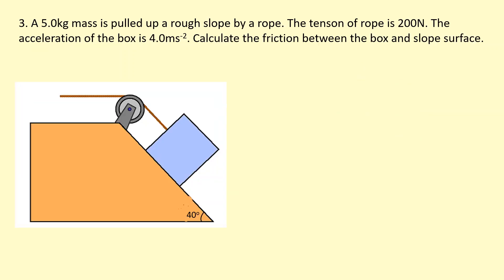A 5 kilogram mass is pulled up a rough slope by a rope. The tension of the rope is 200 Newtons. The acceleration of the box is 4 meters per second squared. Calculate the friction between the box and the slope surface.